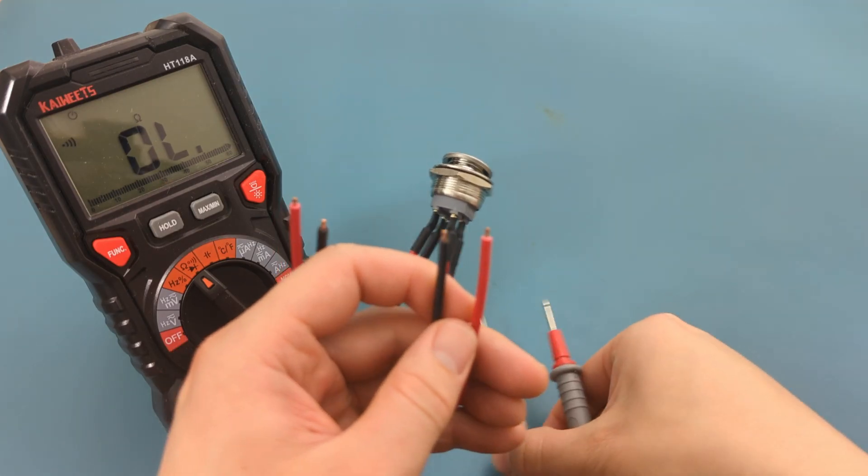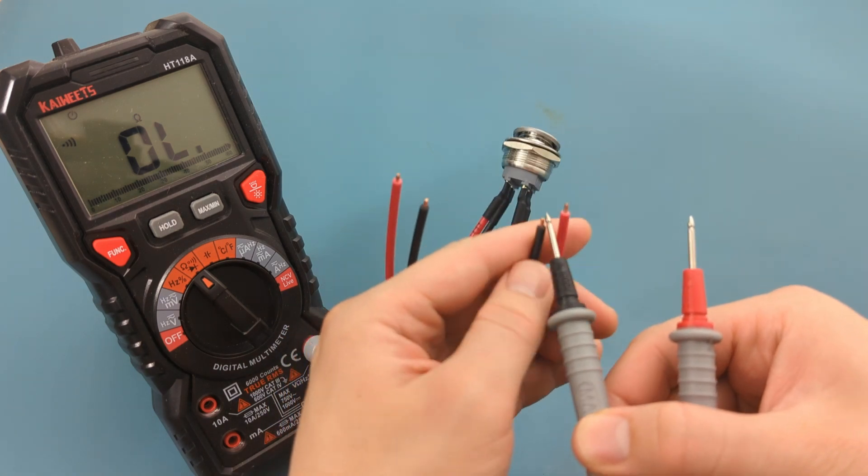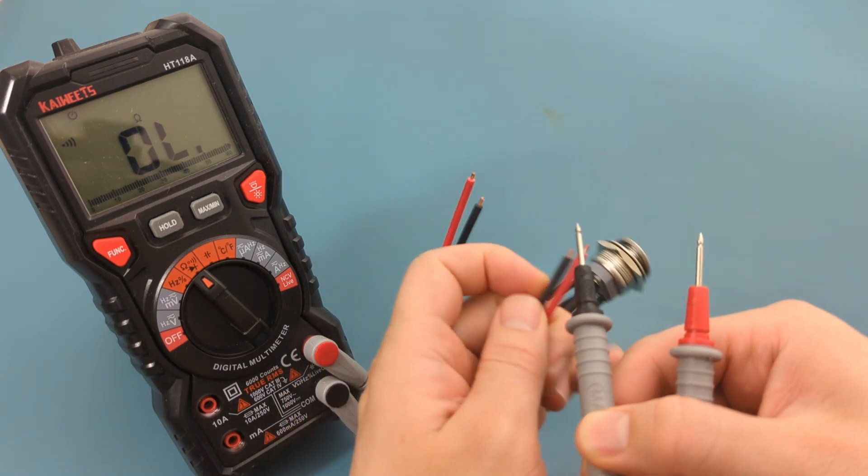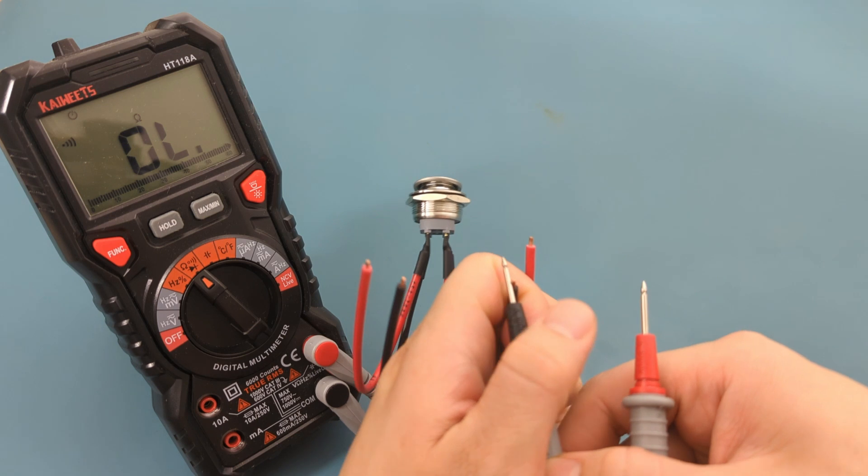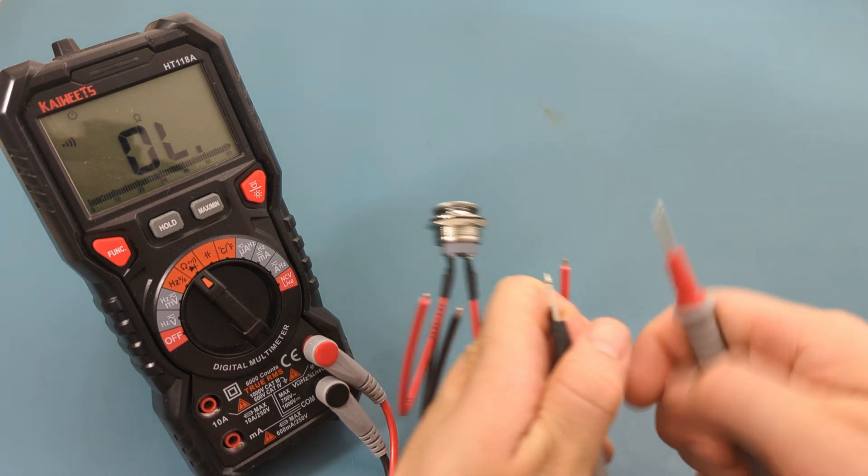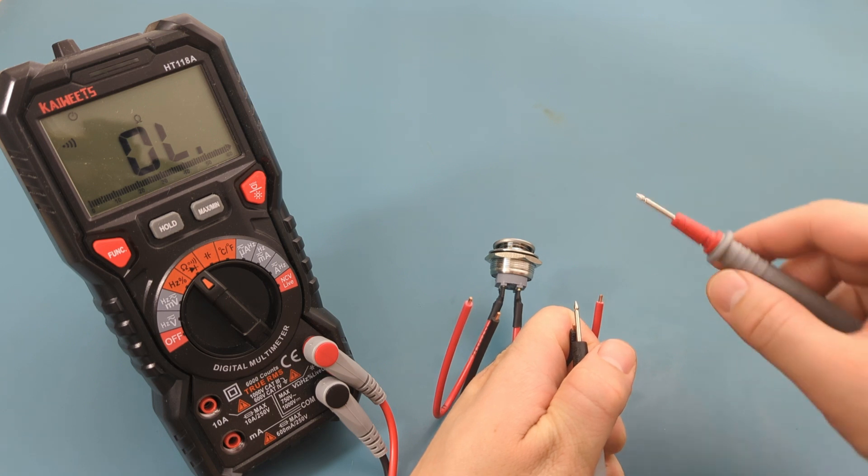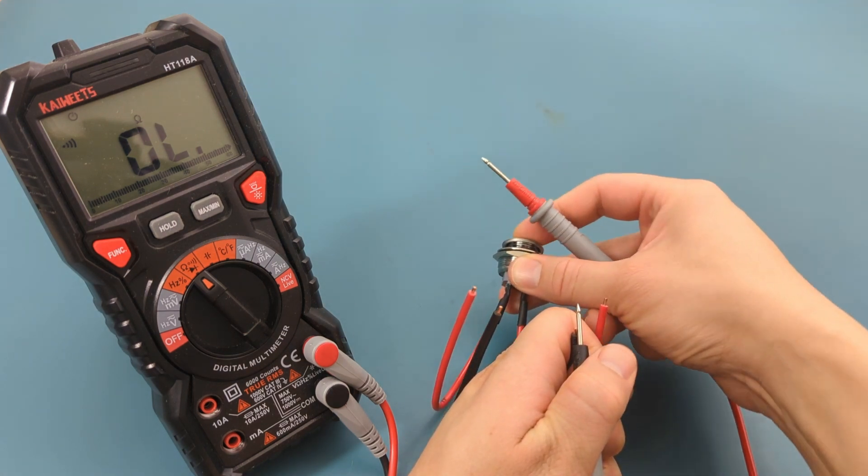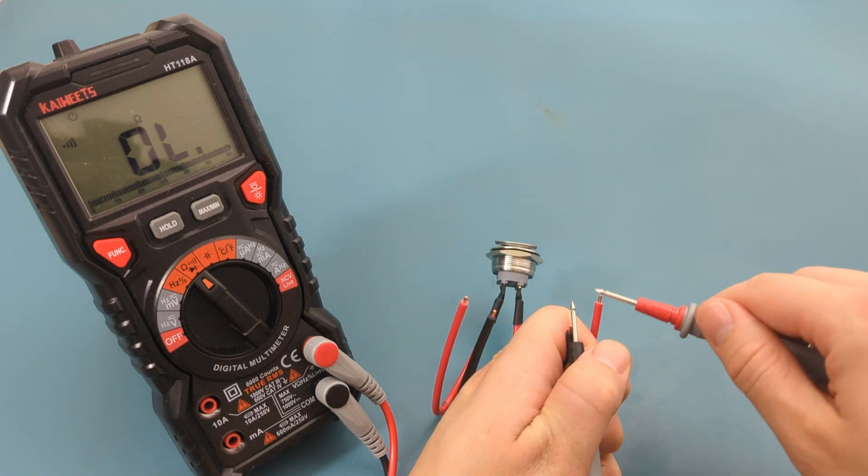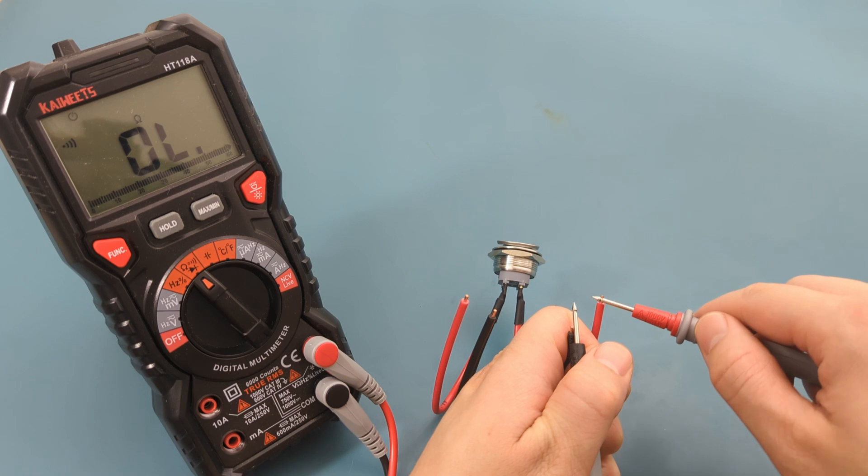Touch the black probe to the black wire, and the red probe to the red wire. You should not hear a beep since the switch is in an open loop. Press the switch to the closed loop. There is a beep, so we have continuity.